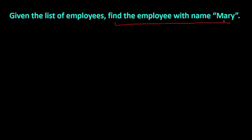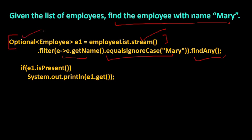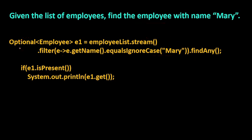Moving to the next question: given a list of employees, find the employee with name 'Mary'. Again a similar type of question — we use a stream on the employee list, filter where e.getName().equals("Mary"), and call findAny(). This returns an Optional. We are using Optional because we want to avoid a NullPointerException. We check isPresent() on the Optional, and if true, we print it.